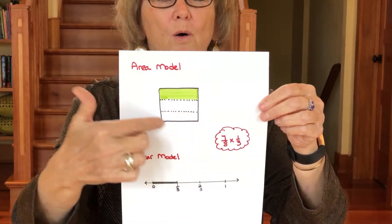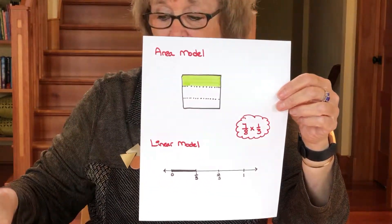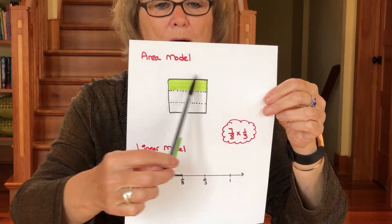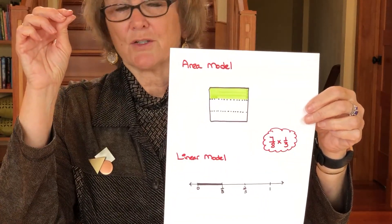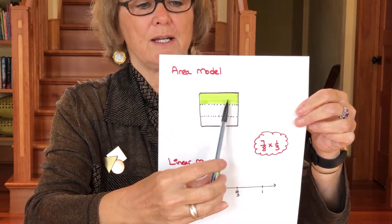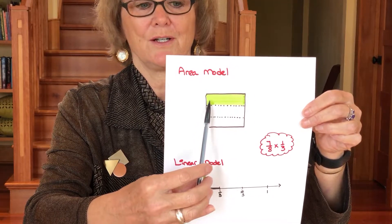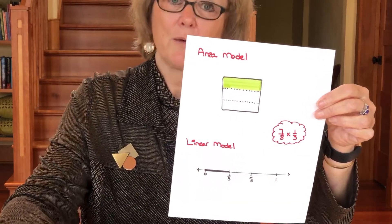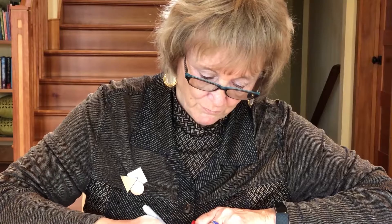In my area model, my whole is this square. I've broken it into three equal parts so that each part is one-third, and I've shaded one of them. I now want to ask the question: what part of this whole is seven-eighths of this green portion? Seven-eighths of this region has to be less than one-third, because one times one-third is one-third, so seven-eighths of it has to be less than a third. I'm going to take my one-third and divide it into eight equal parts.